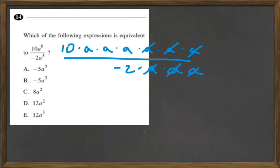And then we can also look at that 10 and the negative 2, and we can divide those, simplify that. So if we have 10 divided by negative 2, well, that's going to equal negative 5.